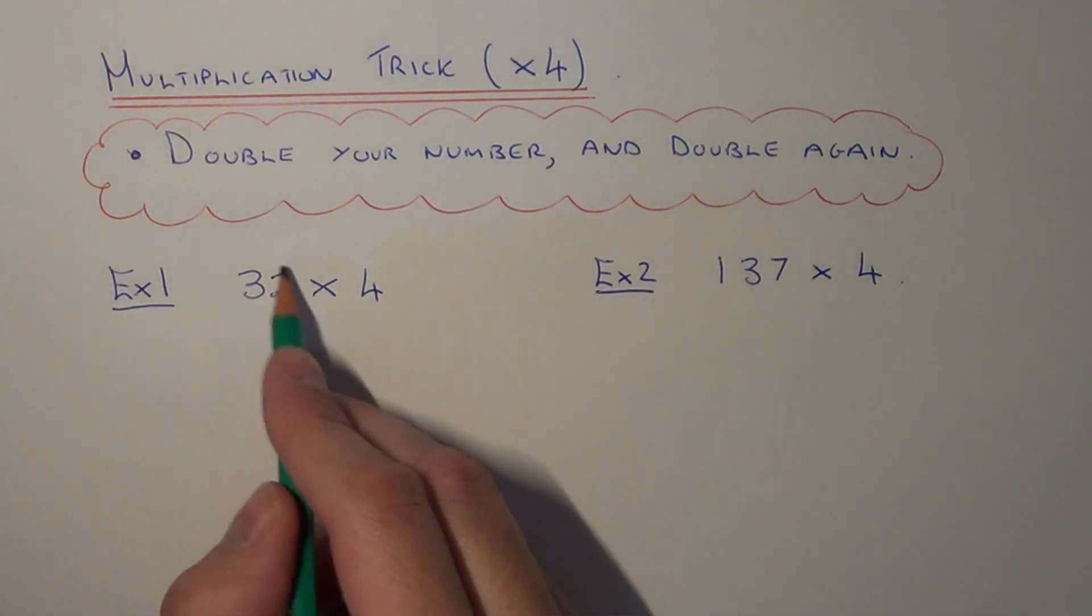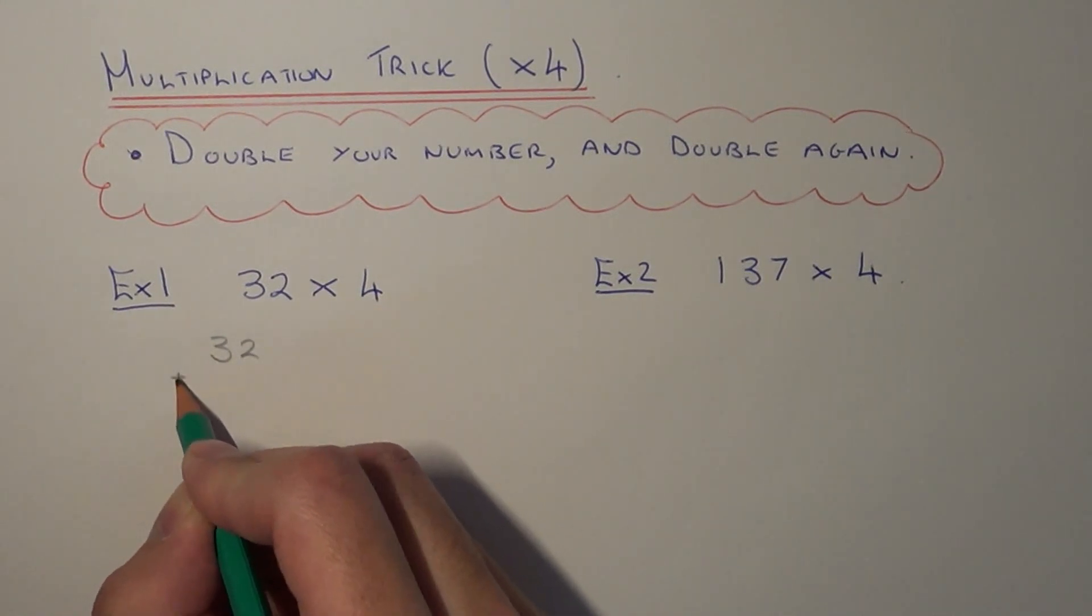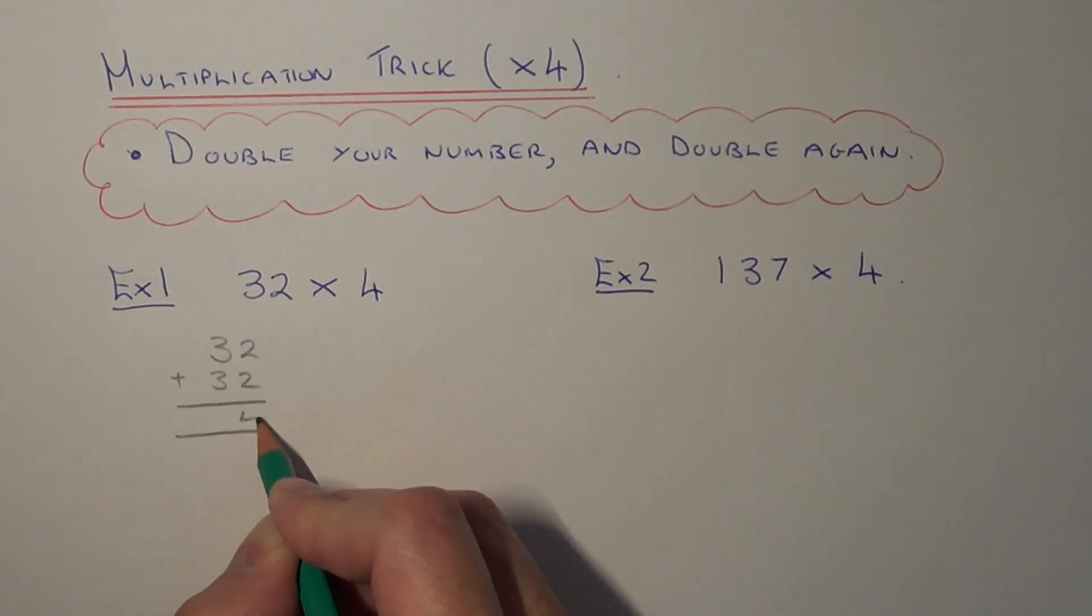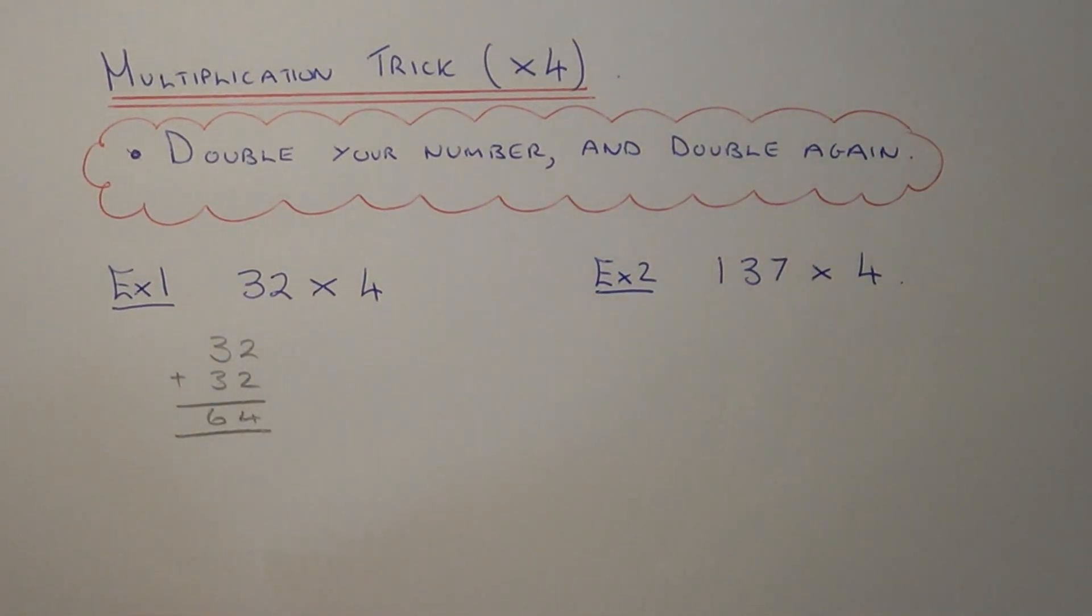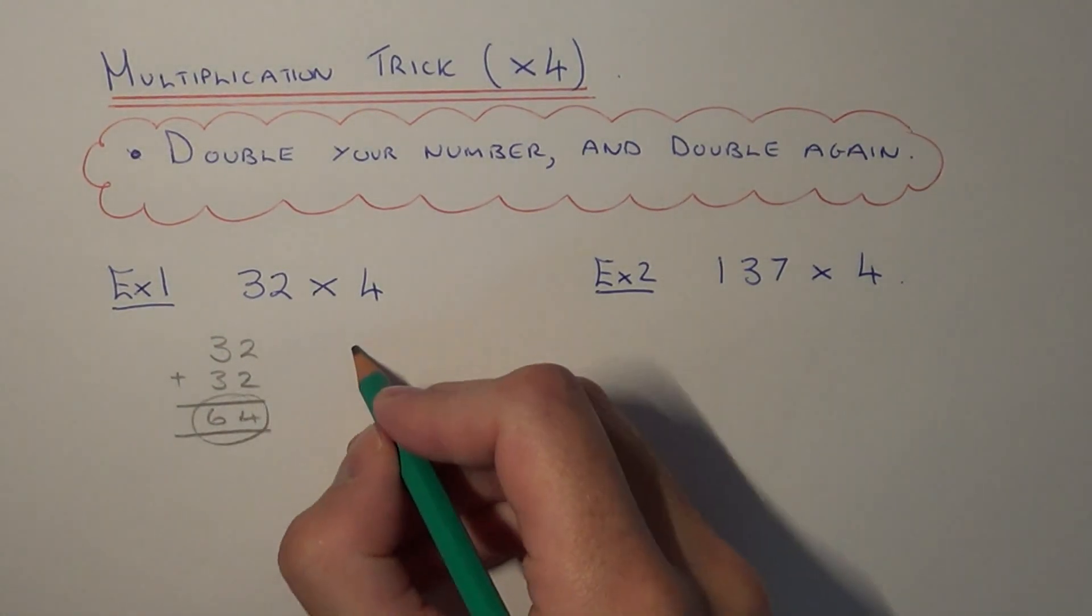So let's double the 32 first of all. We just need to add the number to itself, so 2 add 2 is 4, 3 add 3 is 6. So if we double 32 we get 64 and we now need to just double this answer.